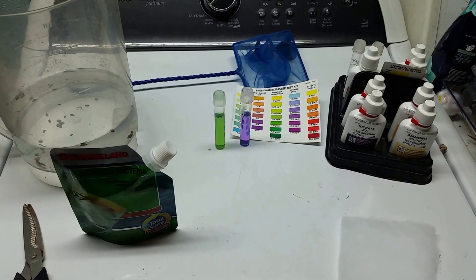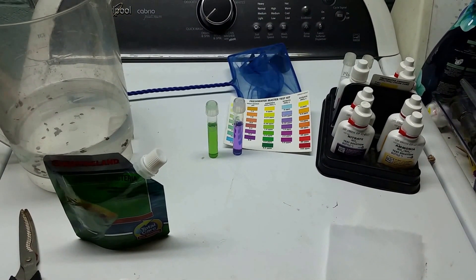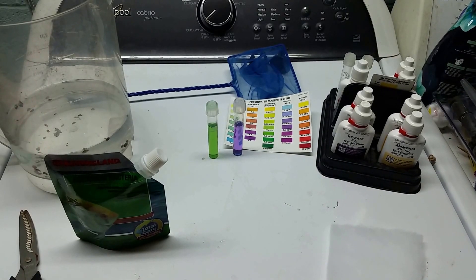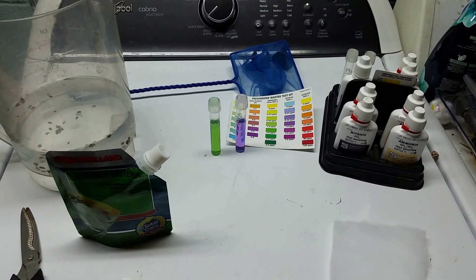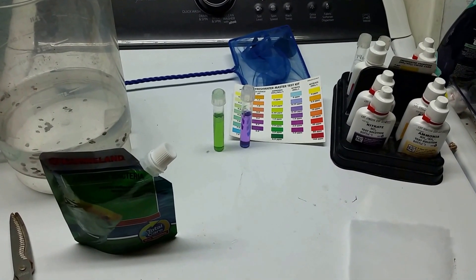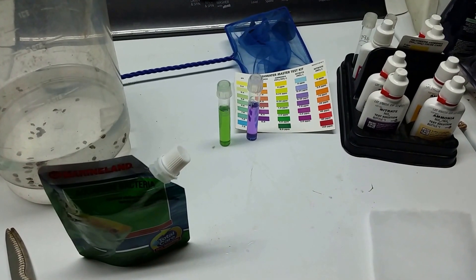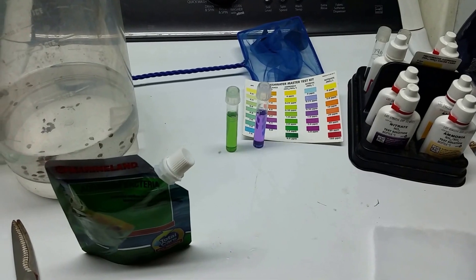So yesterday I was still getting about one part per million ammonia and about a half a part per million nitrite that would develop in about a 24 hour period. I've been doing daily water changes and it takes about that long for the ammonia to get back up to one part per million. I have pretty hardy animals in there so I'm not worried about letting it get up to that level, but I am doing a water change daily.